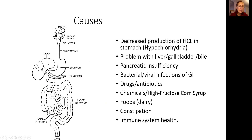Another cause is problems with the liver and gallbladder. Damage to the liver and an imbalance of bile draining into the small intestine does not create the right environment. The same applies to pancreatic juices — you need the right environment in the small intestine. Previous bacterial or viral infections such as Salmonella, Shigella, or Giardia — often contracted when traveling abroad — can damage the lining of the small intestine, create inflammation, and contribute to pathogenic bacterial growth.